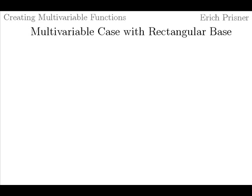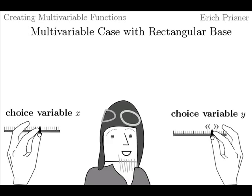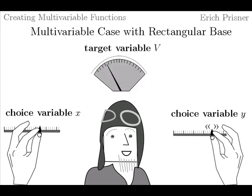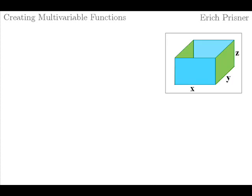In multivariable calculus, we drop the square base requirement. Instead of one choice variable, we now have two of them with width X and depth Y. We have two slider controls in our more advanced cockpit. When we decide about these values, the height Z of the box is determined by the cost restriction. The target variable is still the volume and we have the other variable Z. What about the equations? The volume of a box is still V equals X times Y times Z.